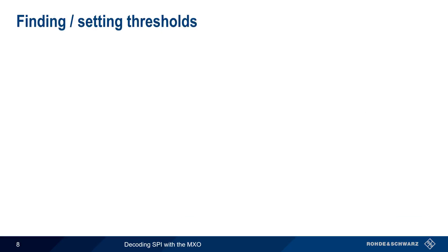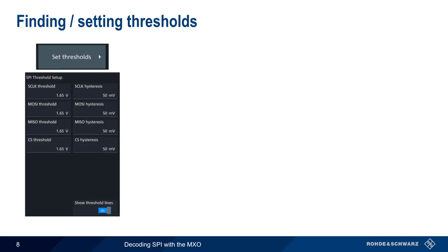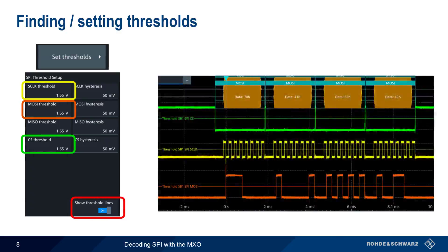Now that we've verified our input channel levels and time base are configured properly, the next step is setting thresholds. These can be thought of as the voltage values that divide a logical 0 from a logical 1. Here, the thresholds for clock, MOSI, and chip select are all 1.65 volts. If we enable 'show threshold lines,' we can see that, in this example, these are appropriate thresholds, since the configured voltage values fall almost directly between the high and low states of our input signals.